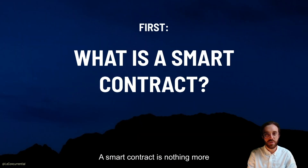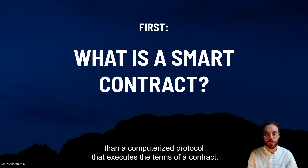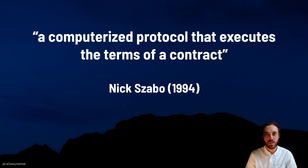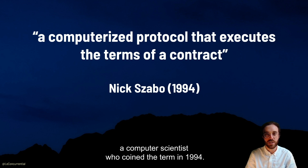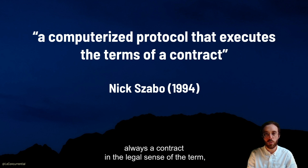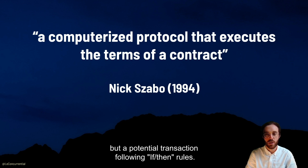A smart contract is nothing more than a computerized protocol that executes the terms of a contract. That is the definition given by Nick Szabo, a computer scientist who coined the term in 1994. In practice, a smart contract is not always a contract in the legal sense of the term, but a potential transaction following if-then rules.